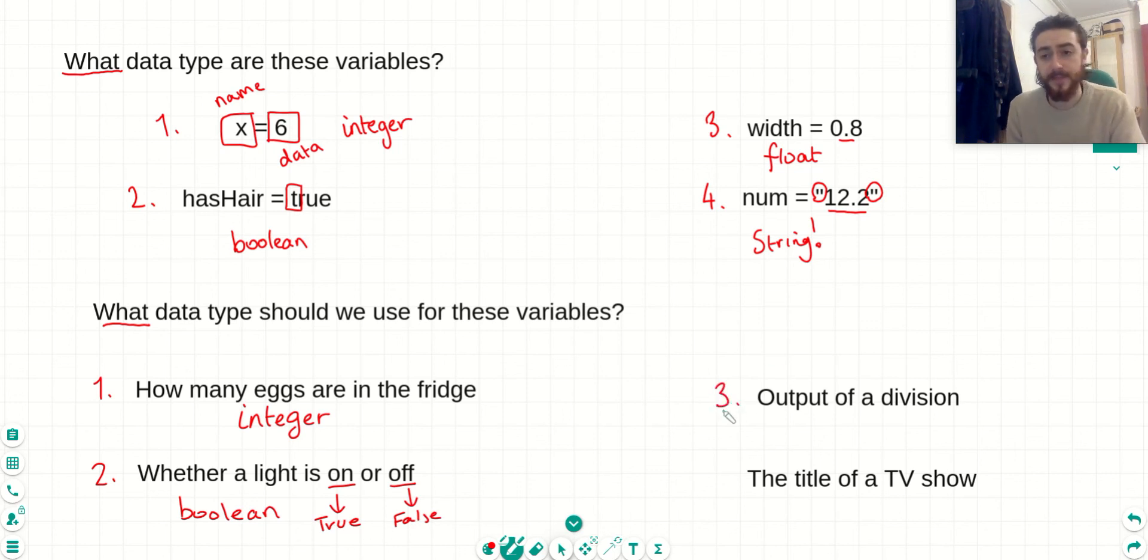Example number three, we want a variable that stores the output of a division for us. Now, this could be an integer. So if we did, for example, six divided by three, it would be two, which would be an integer. However, we don't know what we're going to be dividing by. So because there are cases, for example, one divided by two, where we end up with a decimal number, we want to make sure that the data type of this is a float so that we can make sure that it works for both cases.